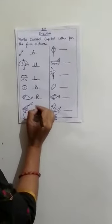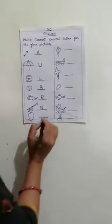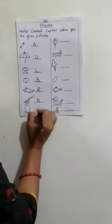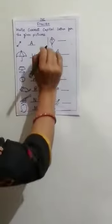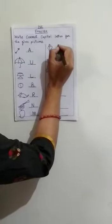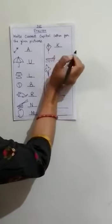Capital N. This is mango. M for mango, capital M. This is kite. K for kite, capital K.